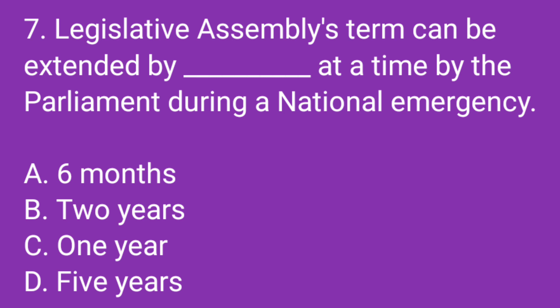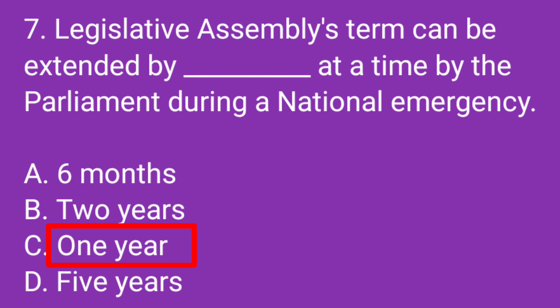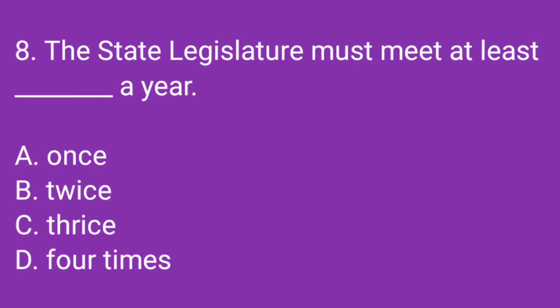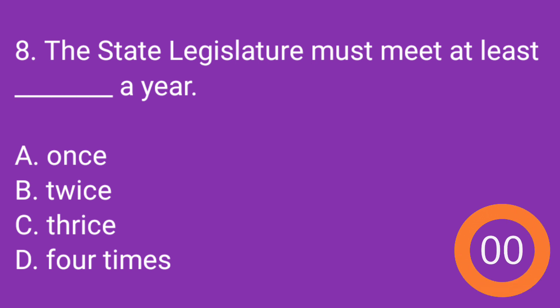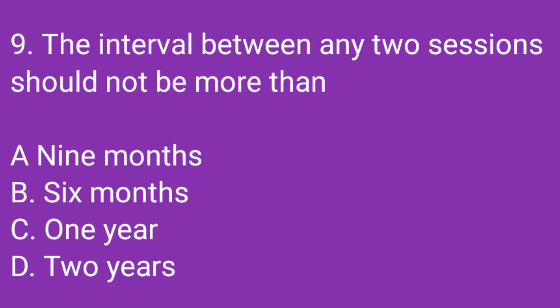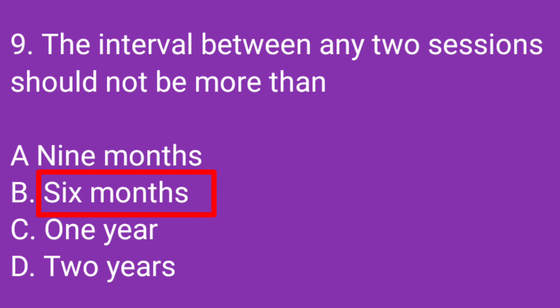Question number 7: The Legislative Assembly's term can be extended by dash at a time by the Parliament during a national emergency. Question number 8: The state legislature must meet at least dash a year. Correct answer: Twice. Question number 9: The interval between any two sessions should not be more than? Correct answer: 6 months.